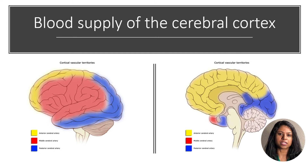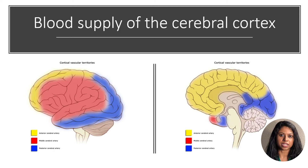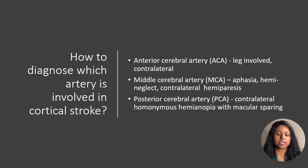In the image, the cortical areas supplied by the anterior cerebral artery are labeled in yellow. Those supplied by the middle cerebral artery are labeled in red, while those supplied by the posterior cerebral artery are labeled in blue. We can diagnose which cortical artery is involved by looking for some key signs.